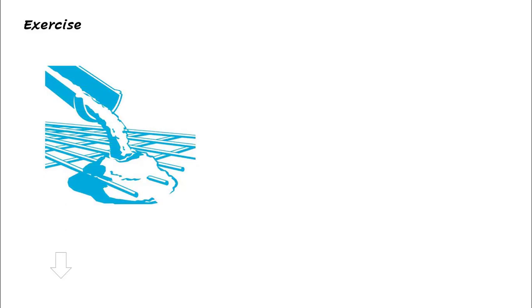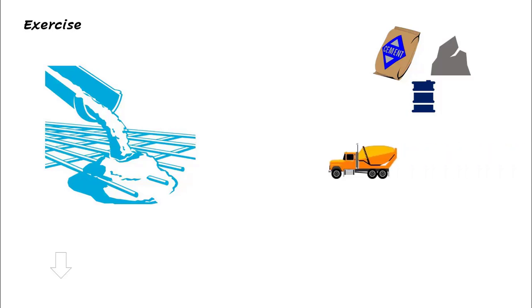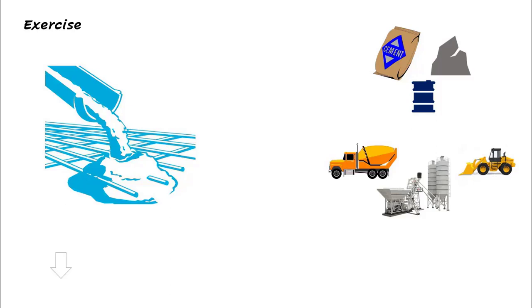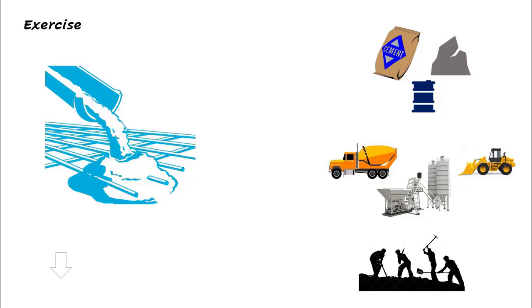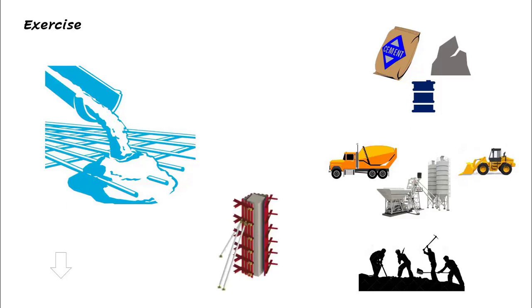Now let's do an exercise — analyzing the unit rate of concrete, with the unit of measurement in cubic meters. Cement, aggregates, admixture, and water fall under the material part. In the machinery part, we have the transit mixer for conveying concrete, the batching plant with generator for production, the wheel loader for feeding aggregates, and a concrete pump. The labor includes workers for production, placing, laying, vibrating, curing, and shuttering — which is most important for casting concrete structures.